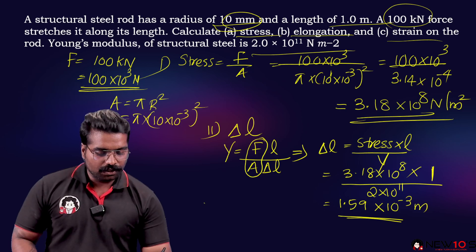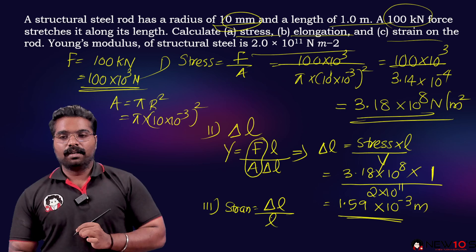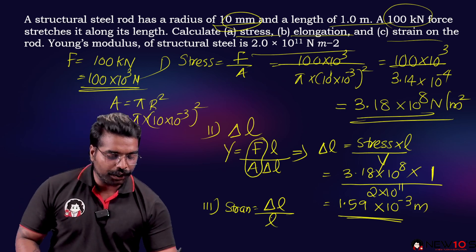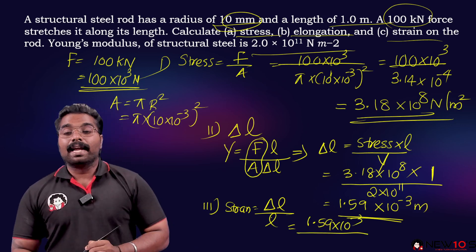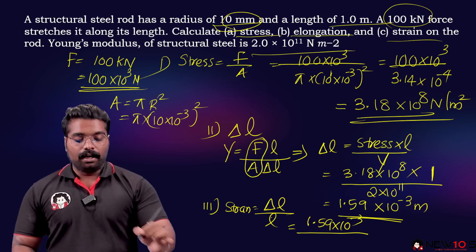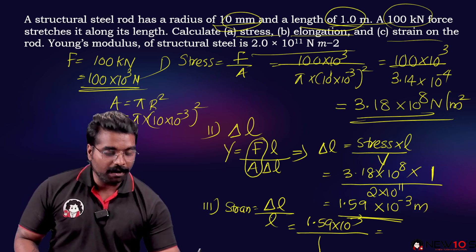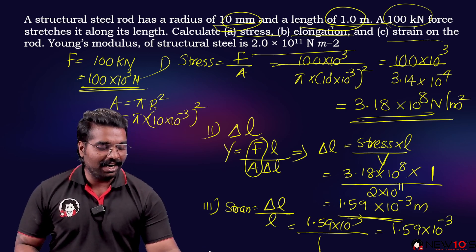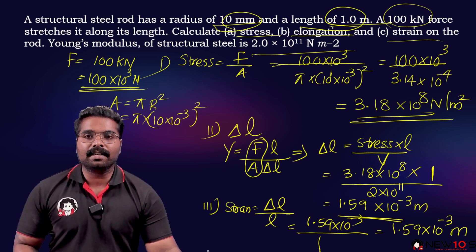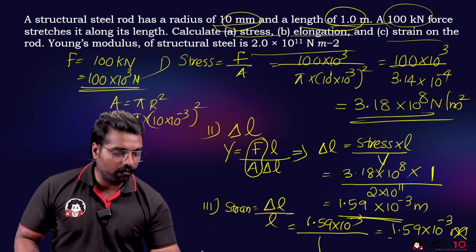Third, calculate strain. Strain is delta L divided by L. Delta L is 1.59 × 10⁻³ m and the original length L is 1 m. So strain = 1.59 × 10⁻³ divided by 1 = 1.59 × 10⁻³. Strain has no unit — it is just a dimensionless value.